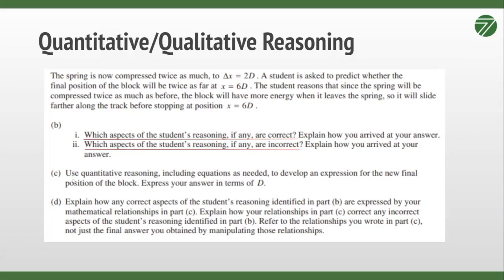And then we see part C says use quantitative reasoning, including equations as needed to develop an expression for the new final position of the block, so express your answer in terms of D. So part B we used qualitative reasoning. I explained that they're correct in this but they're incorrect in this, and that's just kind of I don't have to justify myself with equations or graphs or anything like that. I just have to explain from the paragraph that they gave me I have to cite evidence saying this is what I observed is correct and incorrect.